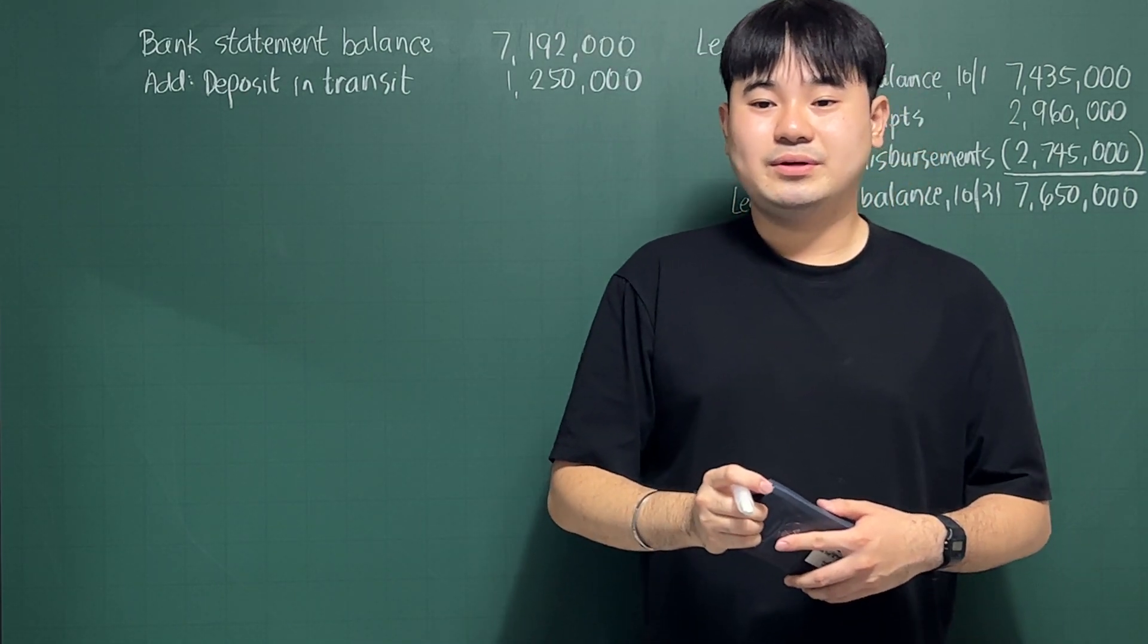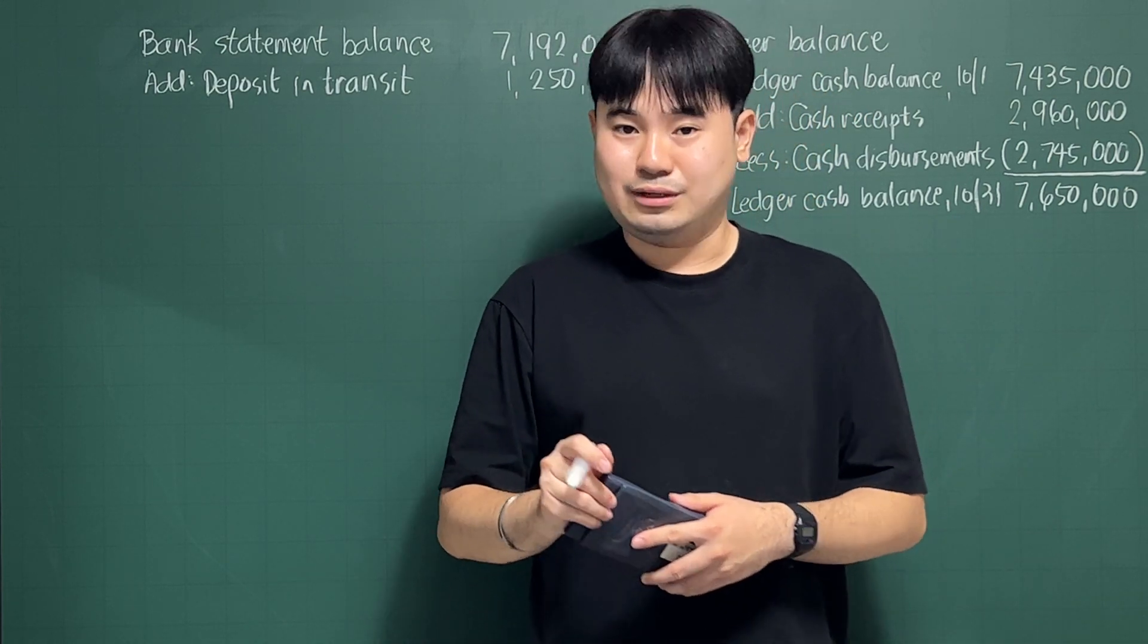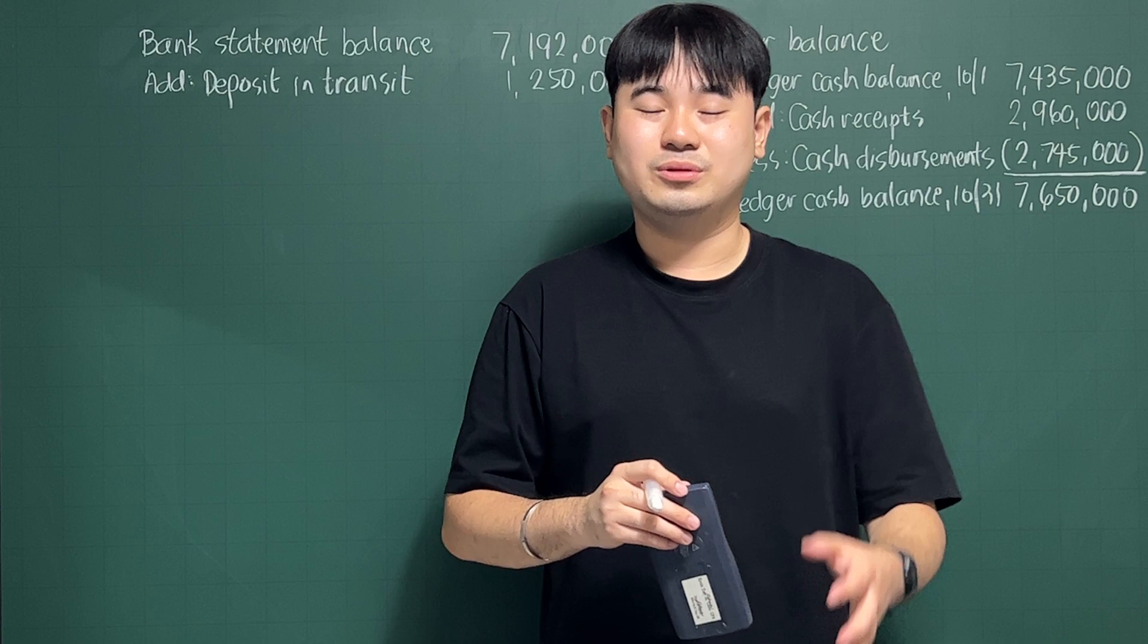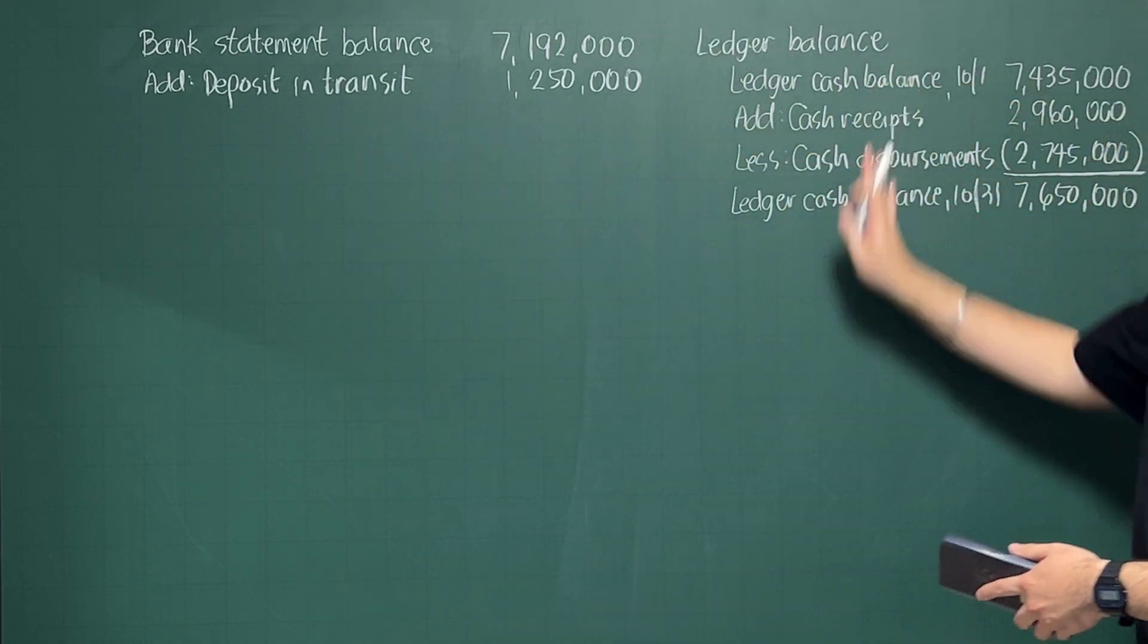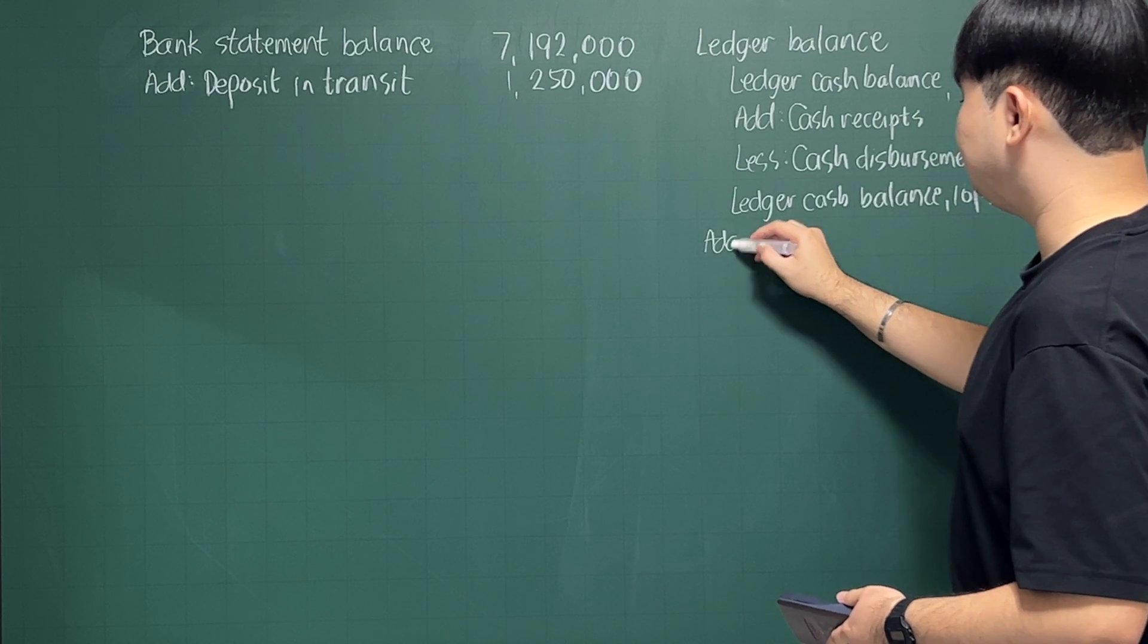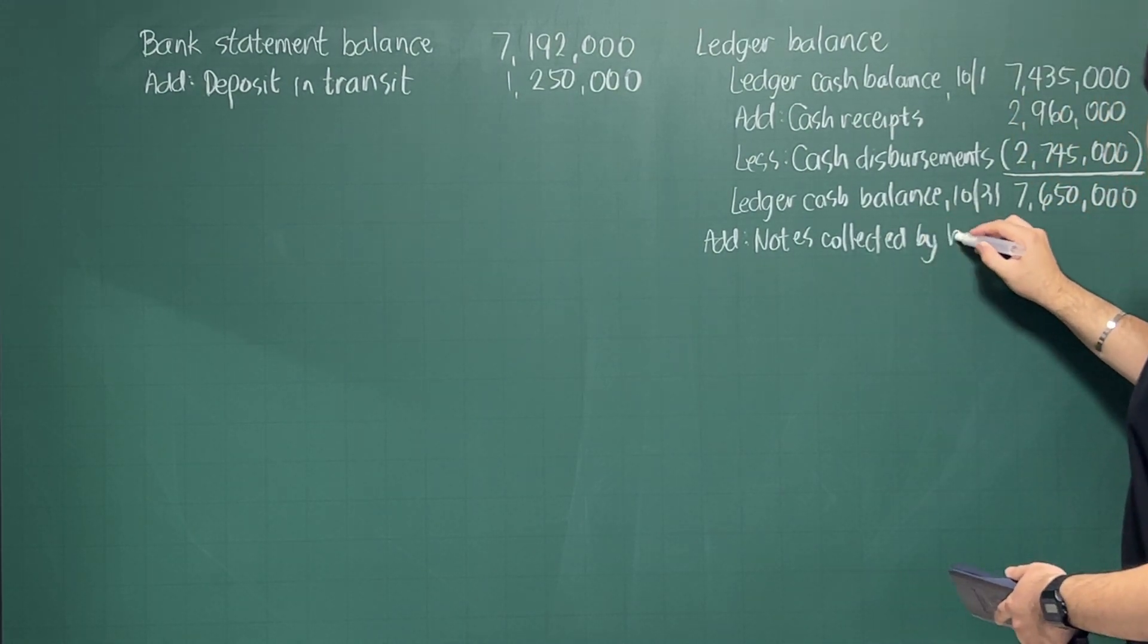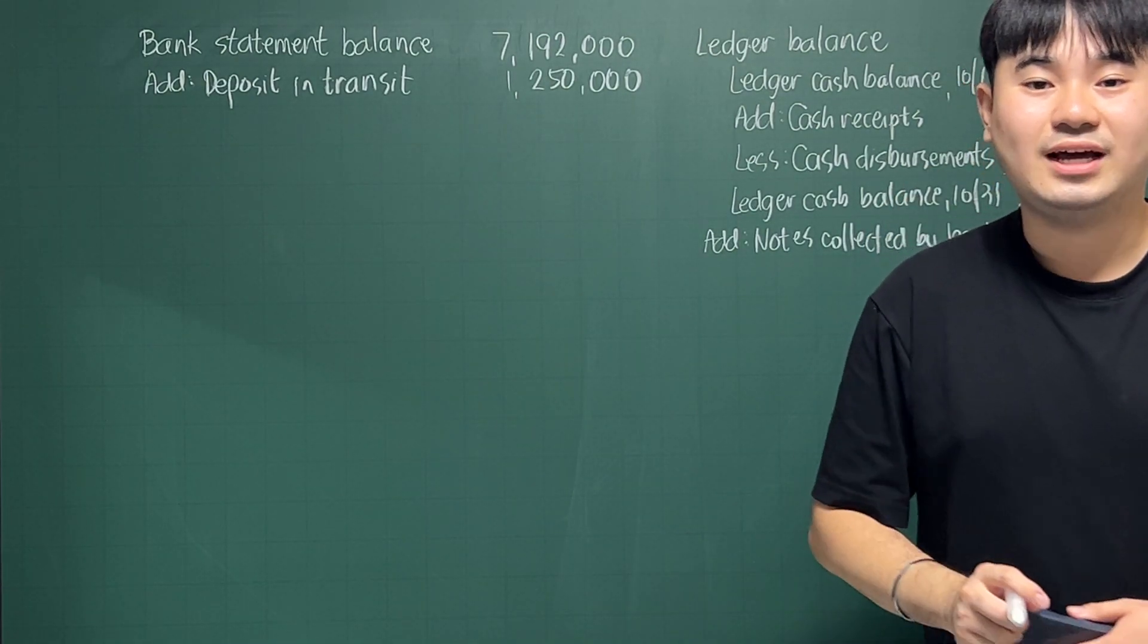The bank statement shows that the bank collected note and credited the proceeds of $890,000 to the entity's account. So that happens that the bank statement will tell you that it actually collected something for you, which is actually called notes collected by the bank. Those notes collected by the bank should be adjusted in the book balance. So you put here notes collected by the bank, add the notes collected by the bank, which is $890,000.